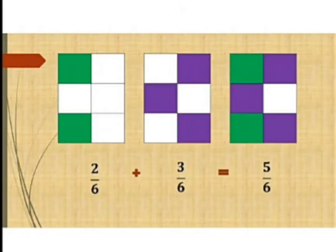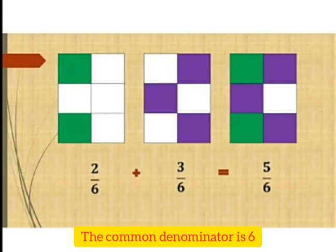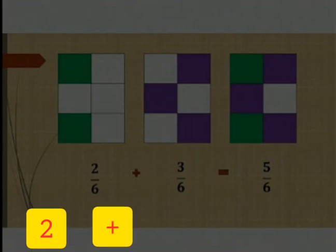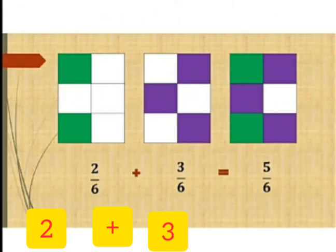This is a diagram demonstrating addition of fractions. We have two over six plus three over six. When the denominator is a common denominator, what you do is add only the numerator: two plus three gives us five over six.